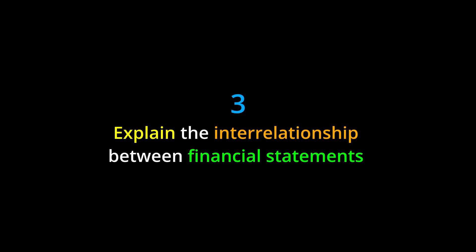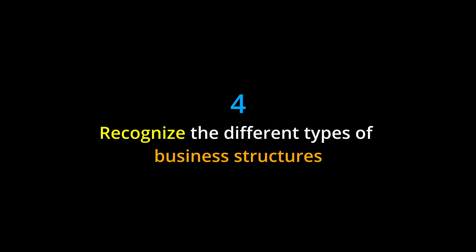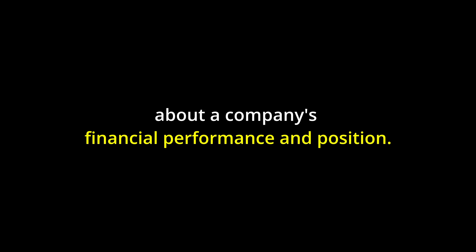Three, explain the interrelationship between financial statements and how they are prepared in a specific order. Four, recognize the different types of business structures and their implications for financial reporting. Key points: financial statements such as the income statement, statement of owner's equity, balance sheet, and statement of cash flows provide valuable information about a company's financial performance and position.